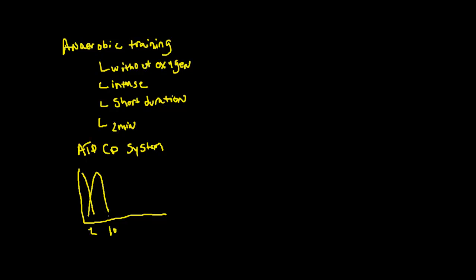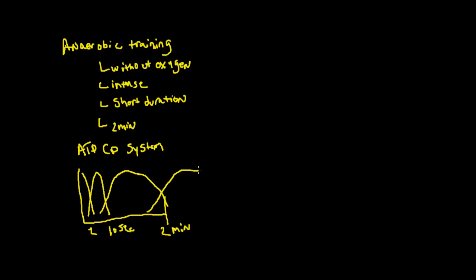After that, the ATP-CP system kicks in and we're using creatine phosphate to replenish the ATP stores. Once we use up that ATP, we have a lot of ADP. Essentially, you're using creatine phosphate to replace the energy stores, and that lasts around ten seconds. After that, glycolysis kicks in — we start breaking down glucose to generate energy, and it starts to fade away around the two-minute level.